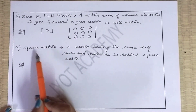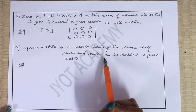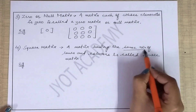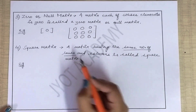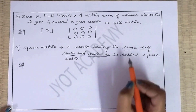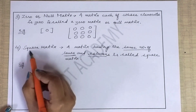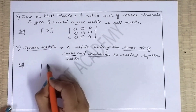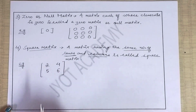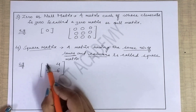Now let's see square matrix. A matrix having the same number of rows and columns is called the square matrix. Yahaan yeh bahot important hai — aapki dono cheezein same honi chahiye. Agar meri paas two rows hain, column bhi mere paas two honi chahiye. For example, [2, 4; 5, 6] — yeh meri ek square matrix hai because yahaan kitni rows hain? Two rows, two columns — so 2×2 hai is matrix ka order.